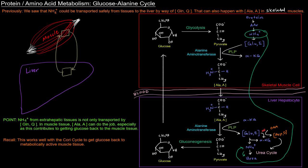This works well with the Cori cycle to get glucose back to metabolically active tissue, and we're killing two birds with one stone. In addition to doing that, you're getting the nitrogen out from the skeletal muscle to the liver to be detoxified.